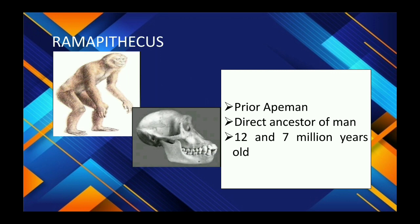Next is Ramapithecus, considered the direct ancestor of man, dating 12 to 7 million years old. The fossil contains only jaws and dentition collected from India and Africa. It walked erect on its feet, had a small jaw and low crown, molars with a thick layer of enamel, and ate hard nuts and seeds.